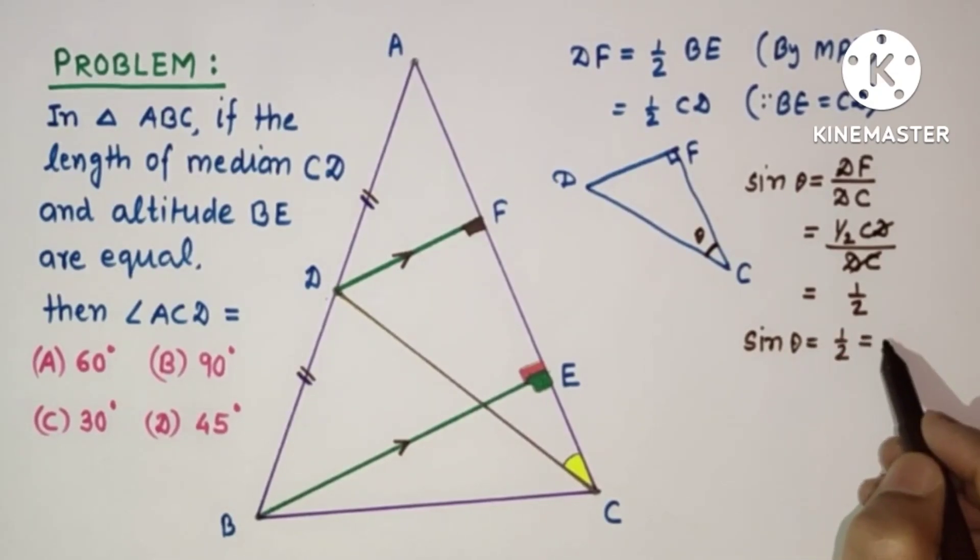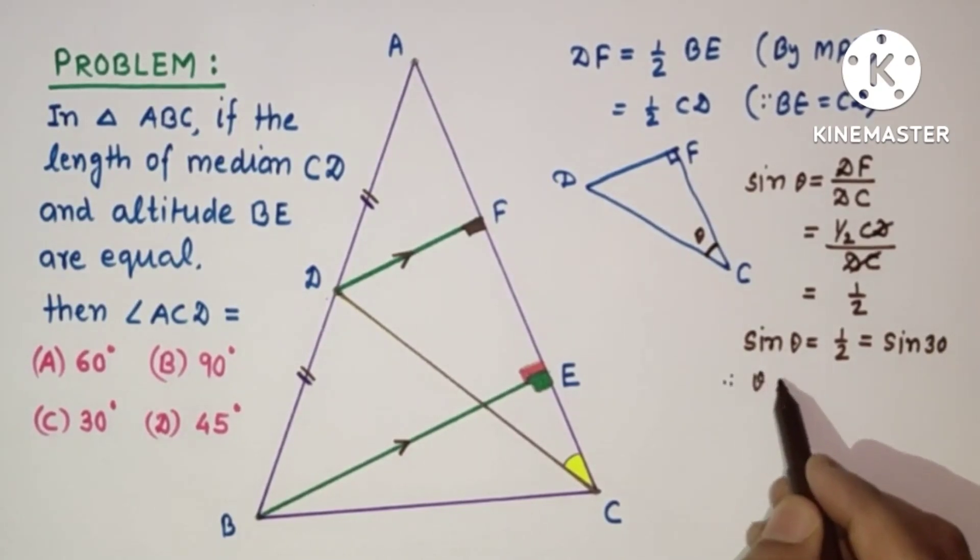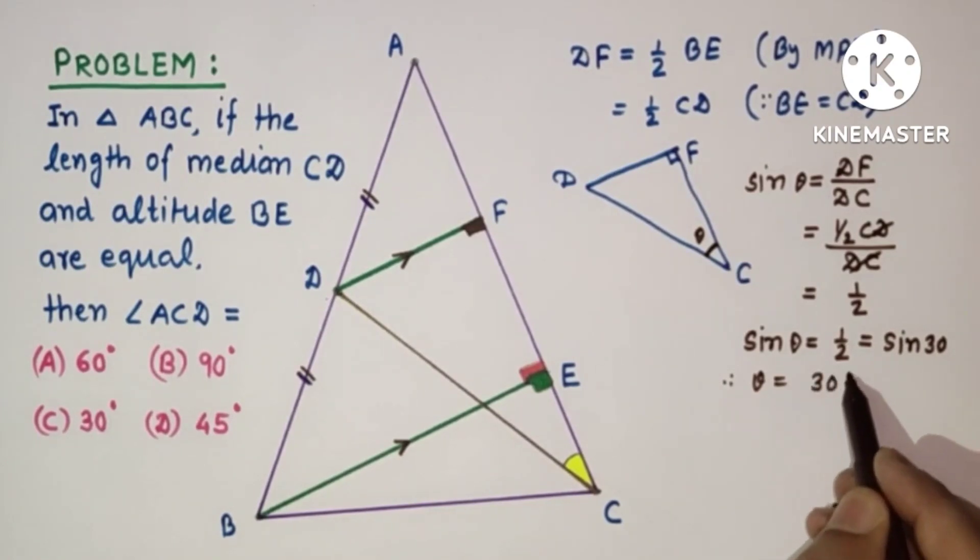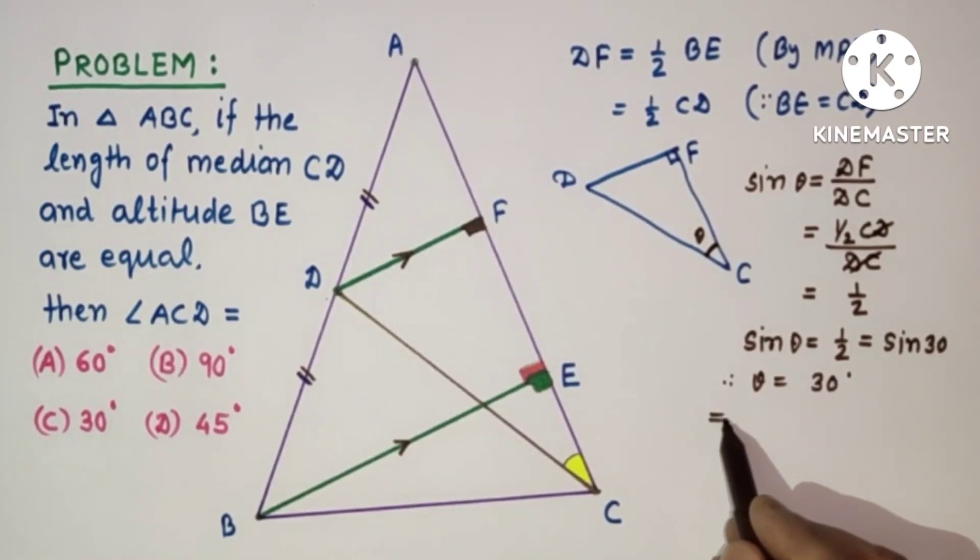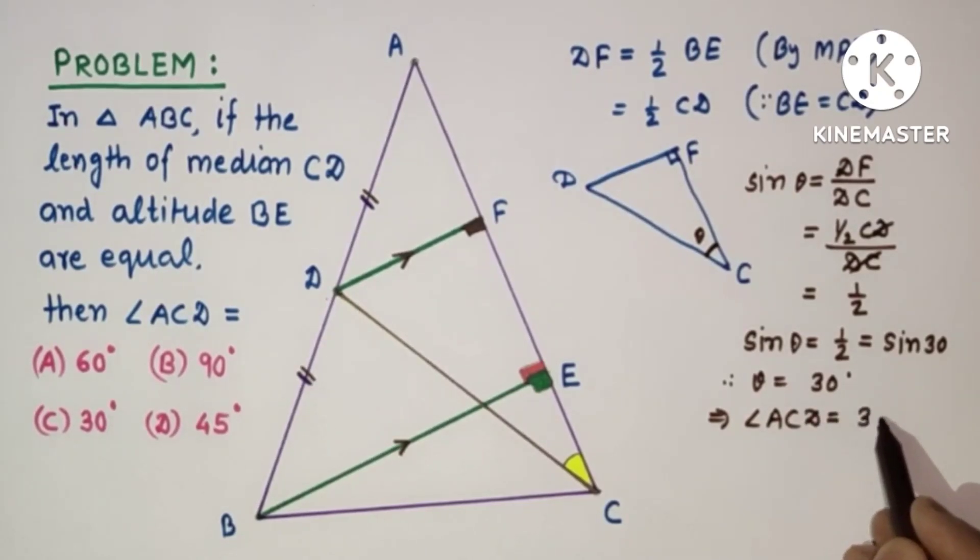And that half is equal to sin 30, if it is acute angle. So therefore theta is equal to 30 degrees. That means angle ACD is equal to 30 degrees.